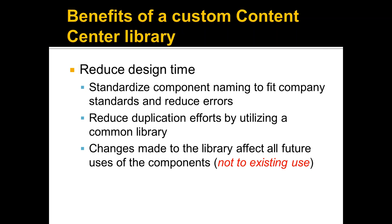So the question that always comes up is: what about the components I've already used? There's no utility or process in place when you change the library that will go out and change or update any components already in use. The biggest and easiest way to rectify that is to use Autodesk Vault, because with Vault you can change your master database — like if you change from steel to stainless steel — and run searches to find all instances of that component so you can update everything accordingly.